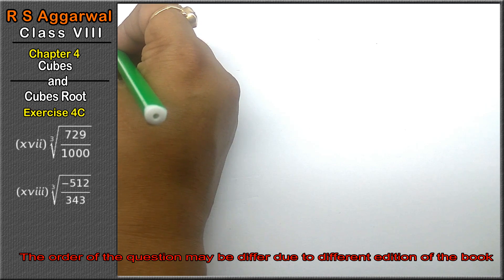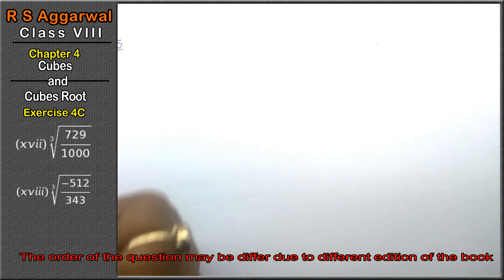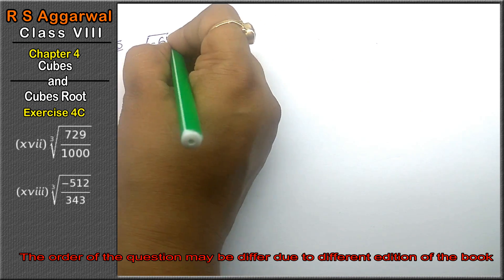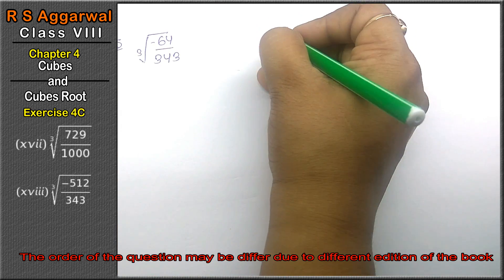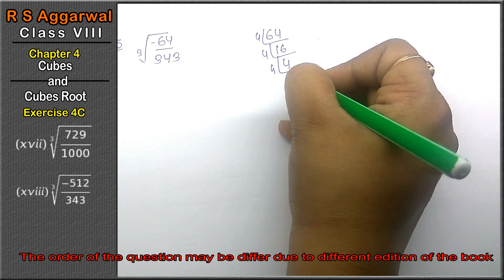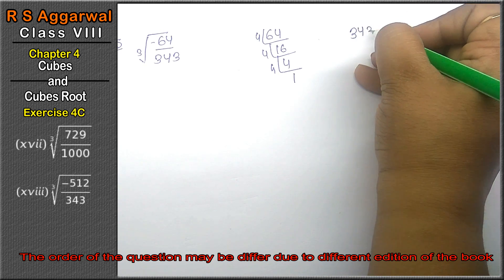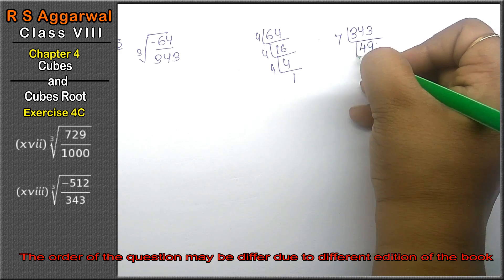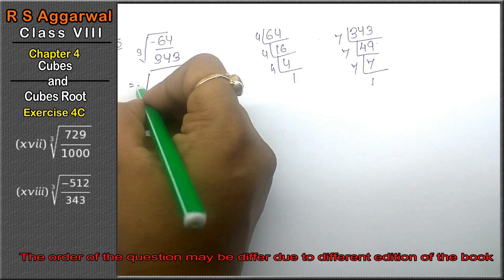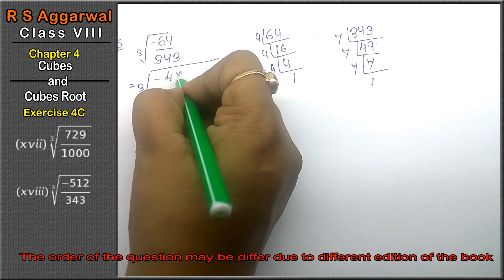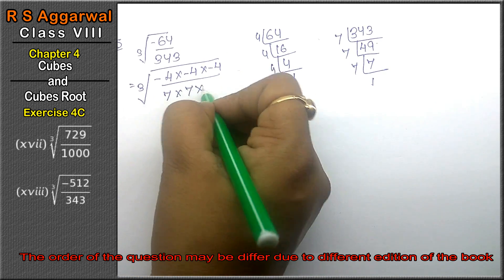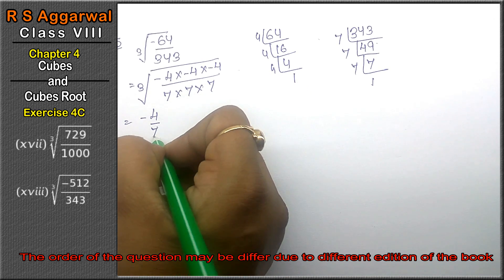Let's do question number 15 of Exercise 4C. Question number 15 is cube root of minus 64 upon 343. 64 = 4×4×4 and 343 = 7×7×7. Writing in cube root: (−4)×(−4)×(−4) upon 7×7×7. Making pairs and taking one out, the answer is minus 4 upon 7.